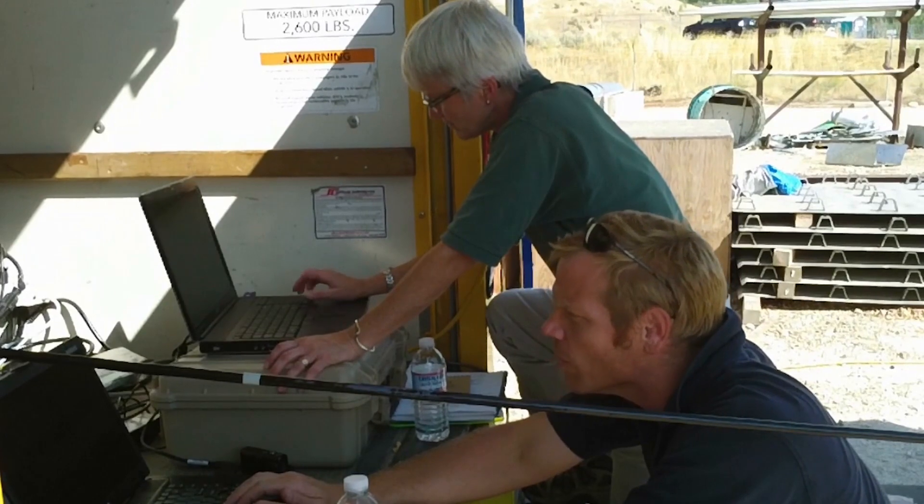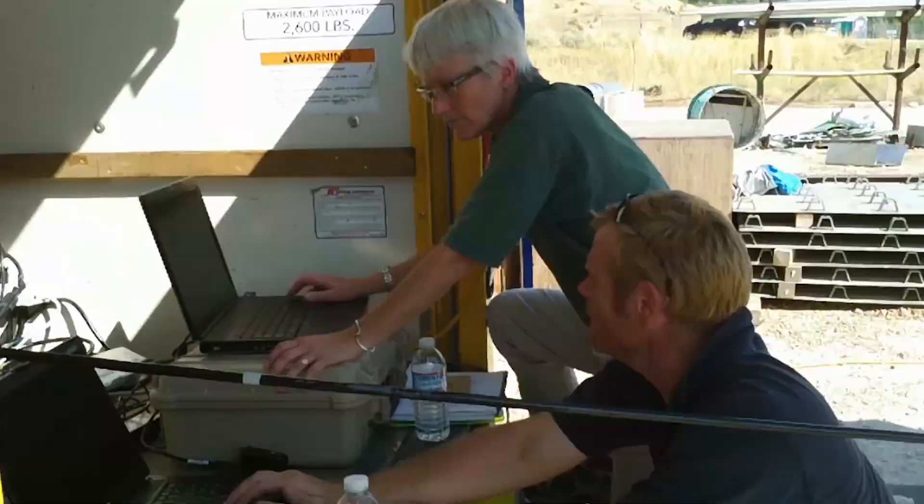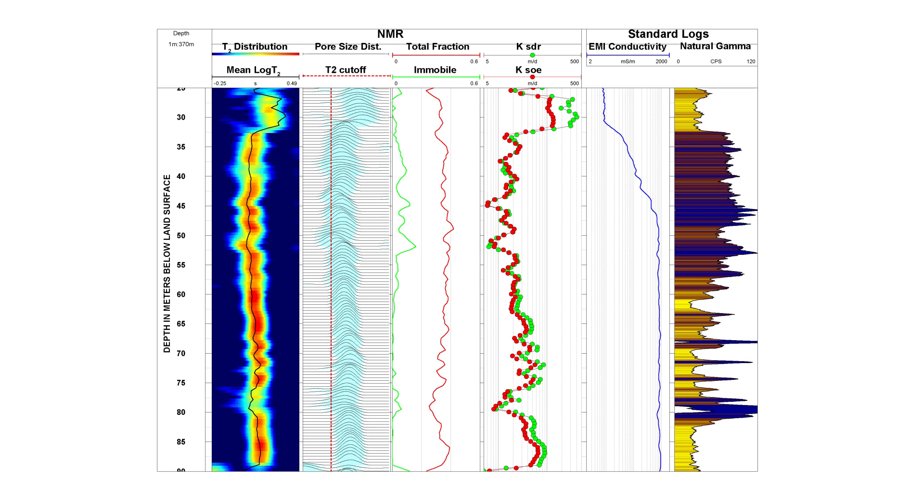Borehole NMR contains information on the overall water content as well as the distribution of the water in porous material. Using borehole NMR logs, practitioners can estimate vertical distributions of water content, porosity, and even pore size distribution.